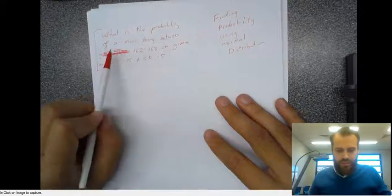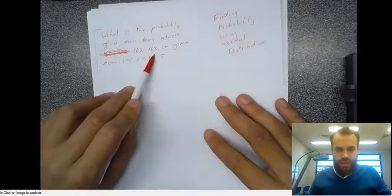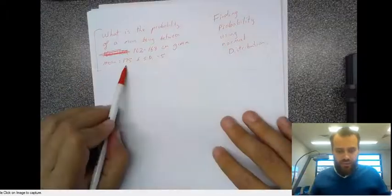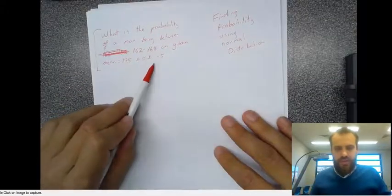What is the probability of a man being between 162 and 168 centimetres, given that the mean is 175 and the standard deviation is equal to 5?